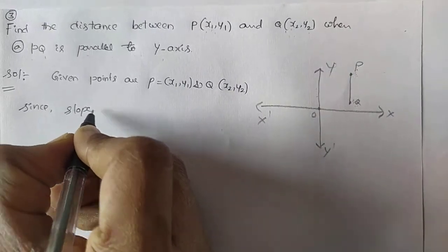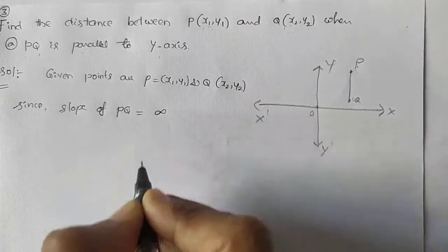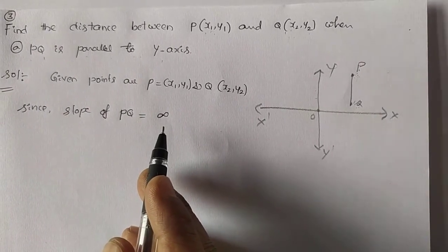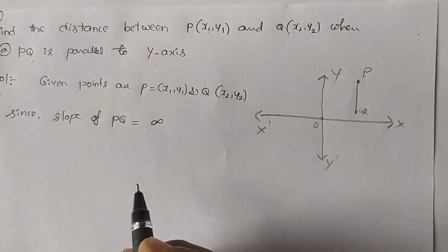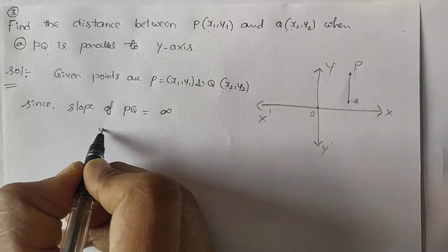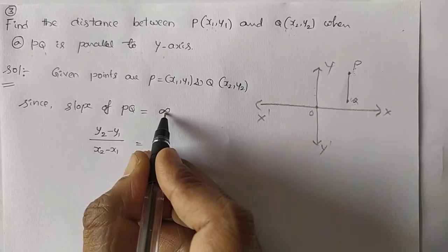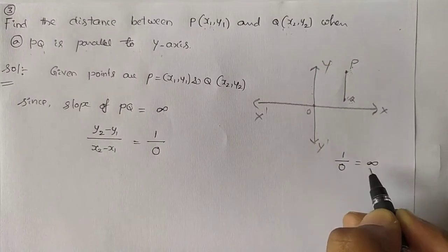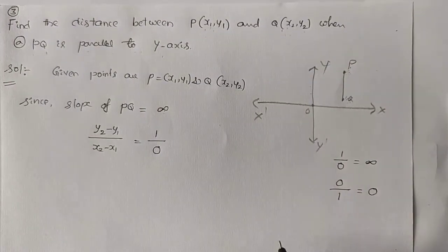Since slope of PQ is not defined, we use the symbol infinity. The slope formula is (y2 minus y1) divided by (x2 minus x1) equals not defined, which is also written as 1 by 0, since 1 by 0 is not defined. Note that 0 divided by 1 is 0, but 1 by 0 is not defined. These are the basic concepts.